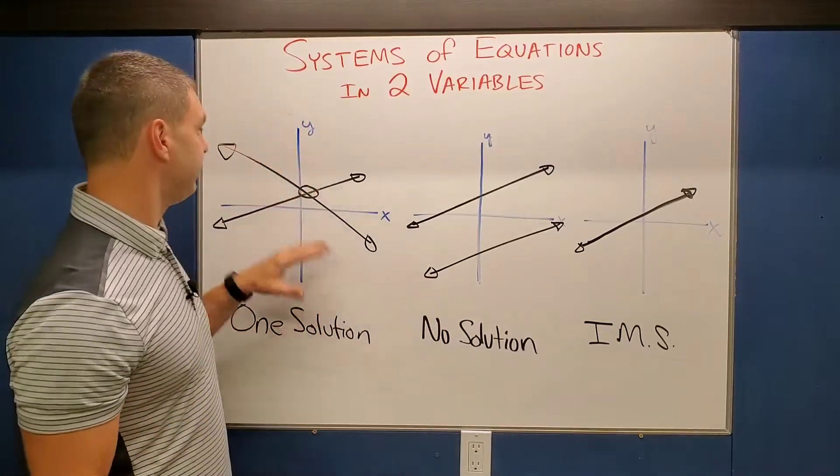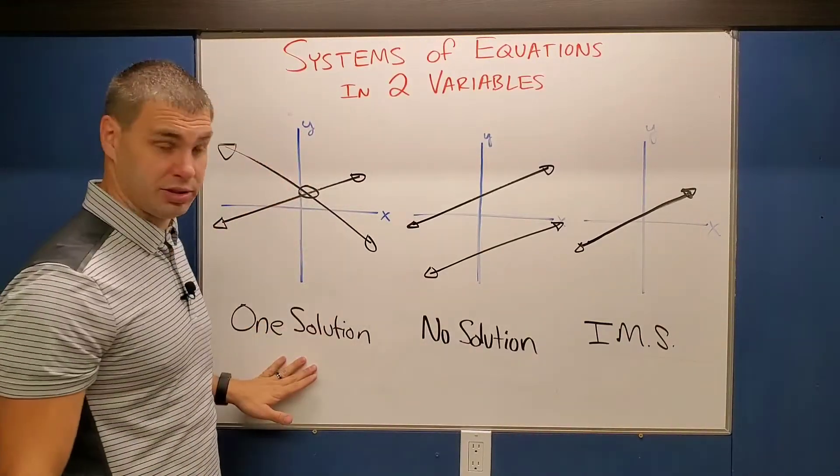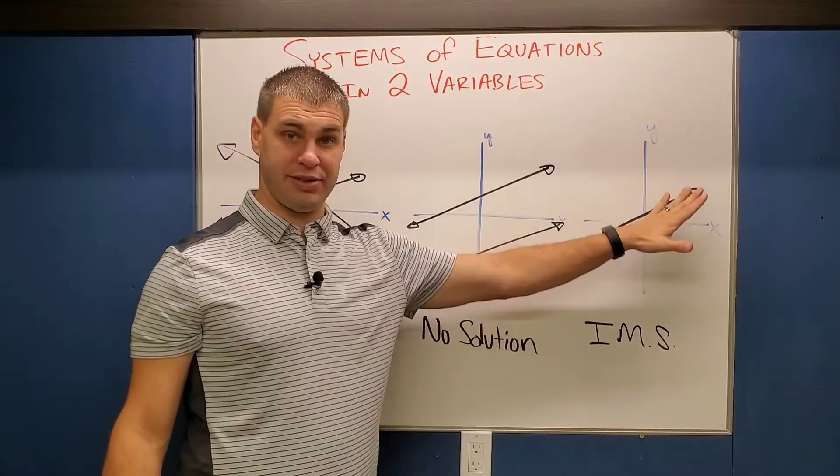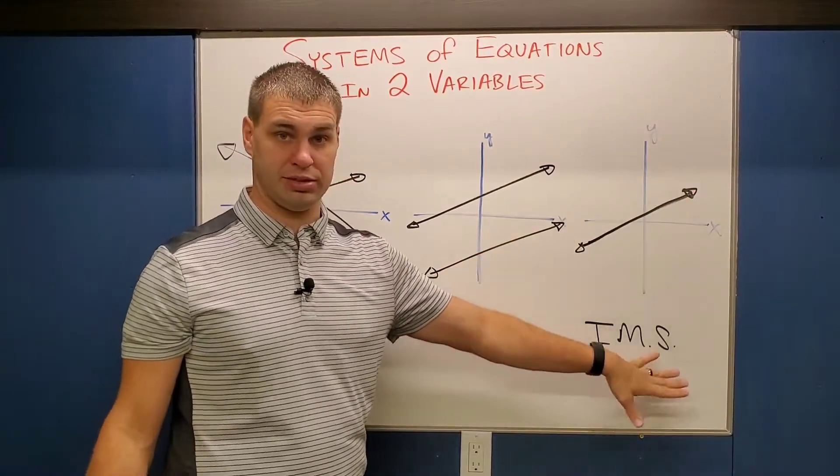Now I have my three types of lines: ones that cross are one solution, ones that don't cross are no solutions, and ones that cross infinitely many times are infinitely many solutions.